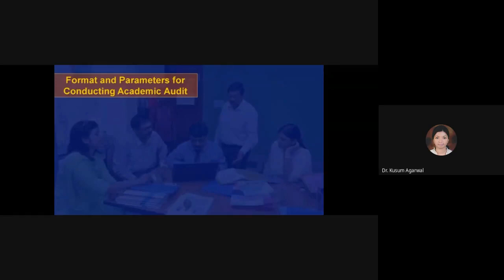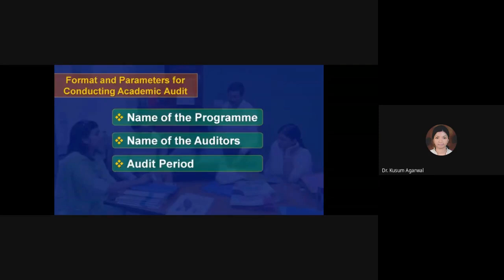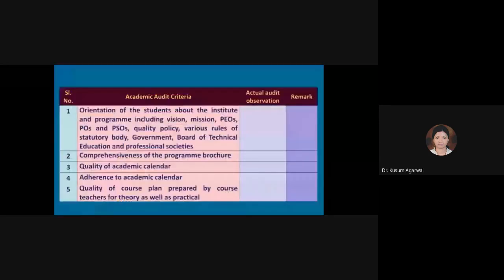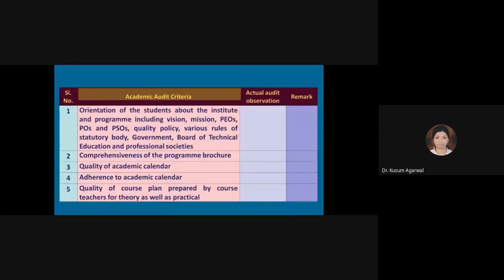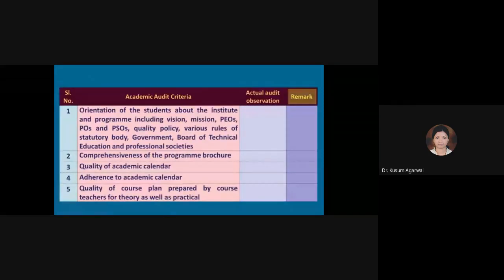The suggestive format could contain the name of the program, name of the auditors, audit period, and audit dates. The first column is serial number, the second column is academic audit parameters, the third column is actual observation of the team, and the fourth column is remarks.